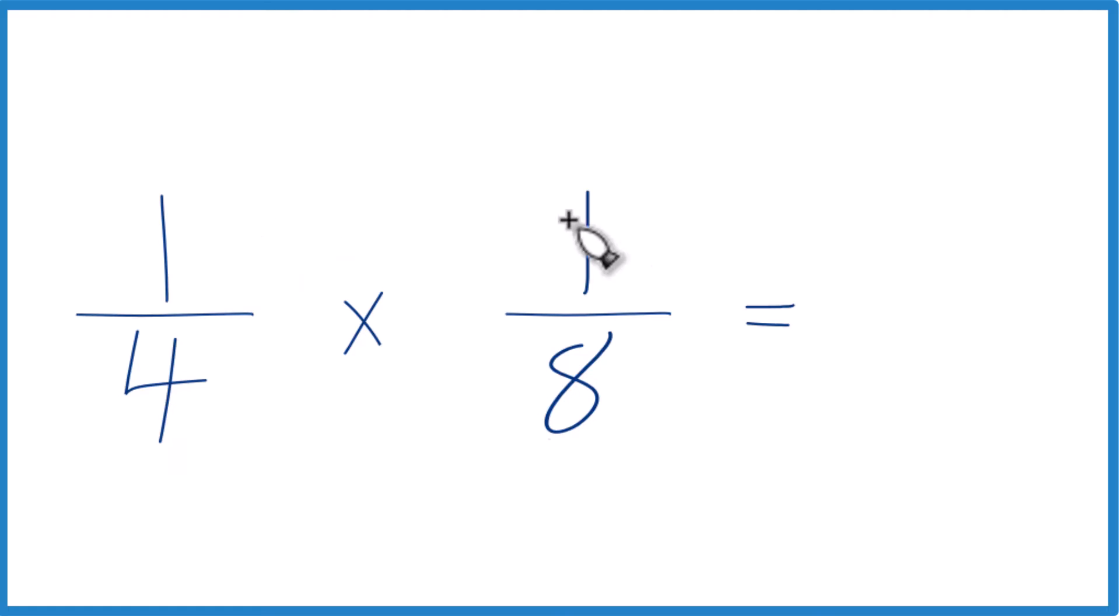1 times 1, we multiply the numerators. 1 times 1, that's 1. And then we multiply the denominators. 4 times 8, that's 32.